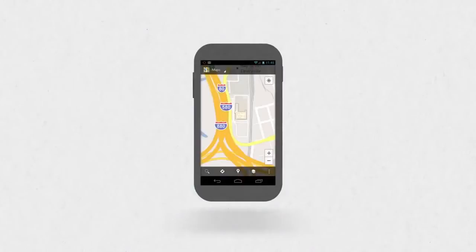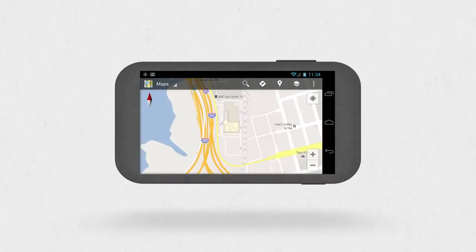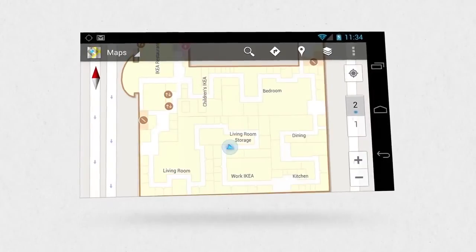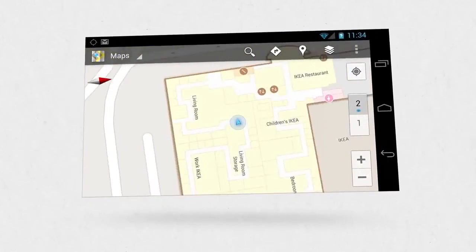This is why the mapping folks at Google added indoor Google Maps. Now it's easy to figure out where you are, orient yourself, and even know what floor you're on.